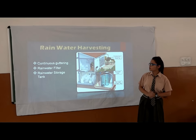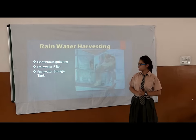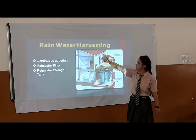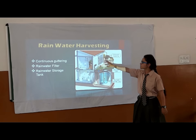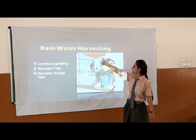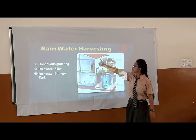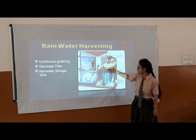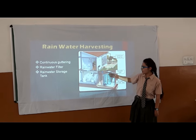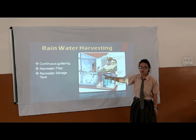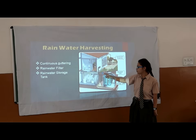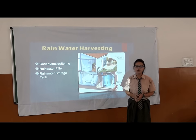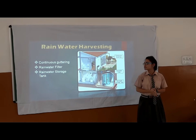Then comes the rainwater harvesting system. In this, you can see we have designed the house like the snowing boots, and then the water gets directed through the tubes and comes out through the tubes again into the reservoir. We have used a rainwater filter which has solid brushes in it, so that the water entering your house is not dirty.